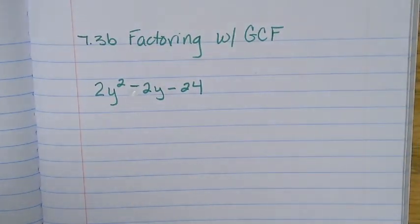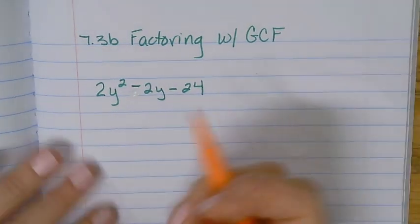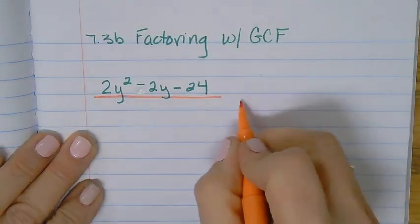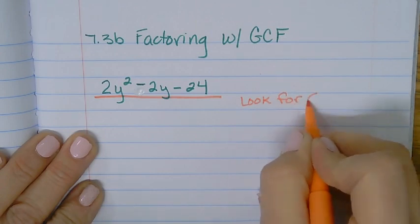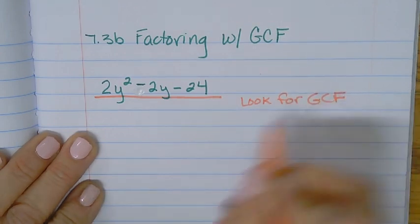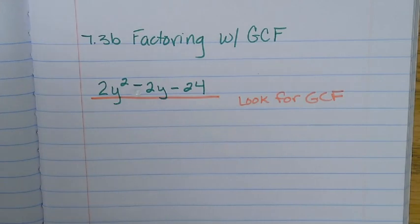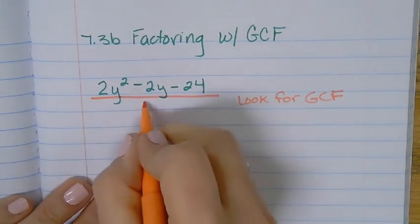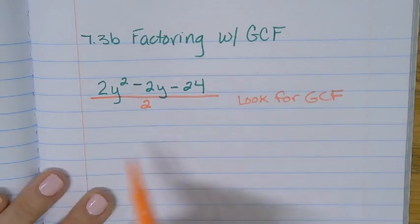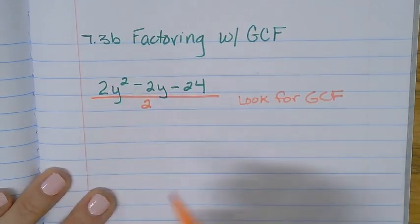The first thing we always want to do is check to see if all three of our terms have a common factor. It could be just a number, it could be a number and a variable. Do all of these have something in common? I think it's a 2. A 2. Okay, so let's divide a 2 out of everything.